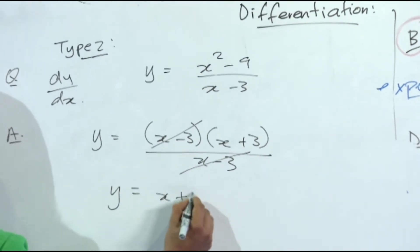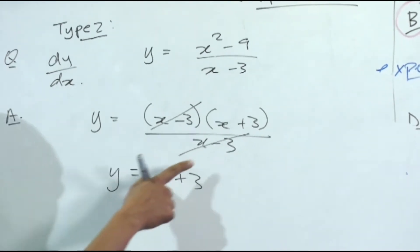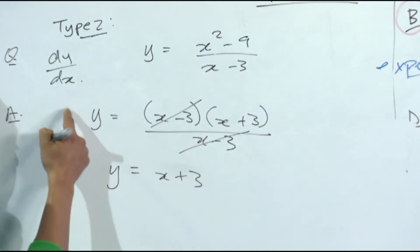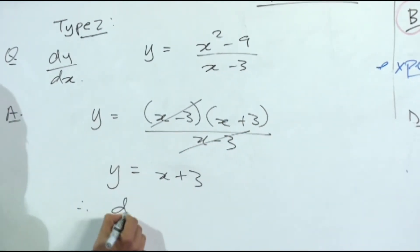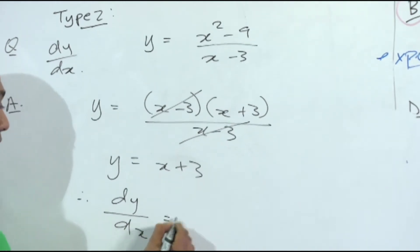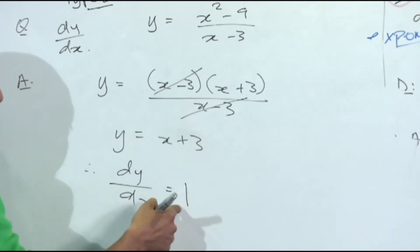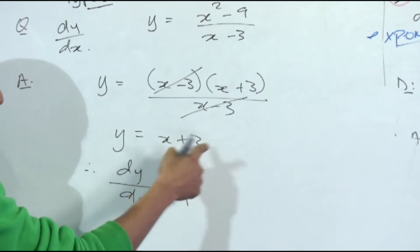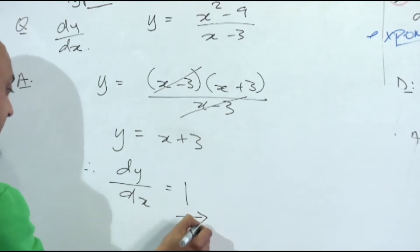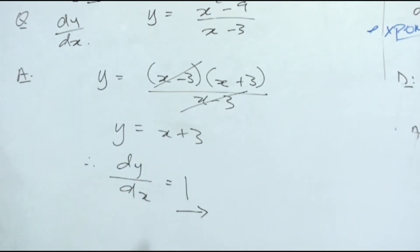Therefore, dy over dx is equal to 1 times 1 is 1, x to the power 0 is 1. The derivative of a whole number is 0, your answer is just simply 1. The derivative of a single unknown is always 1.